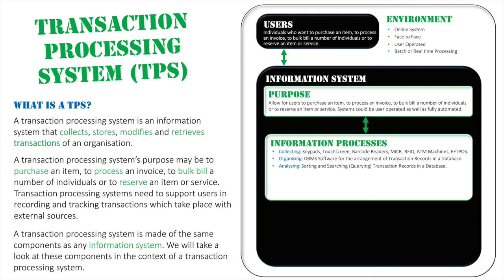For storing and retrieving, we have both transaction files and master files. Transaction files are used for batch processing — files wait before they are batch processed. Master files are the main long-term storage location. When batch processing runs at its scheduled time, the master file is updated then, whereas in real-time processing the master file is updated immediately when a transaction takes place.